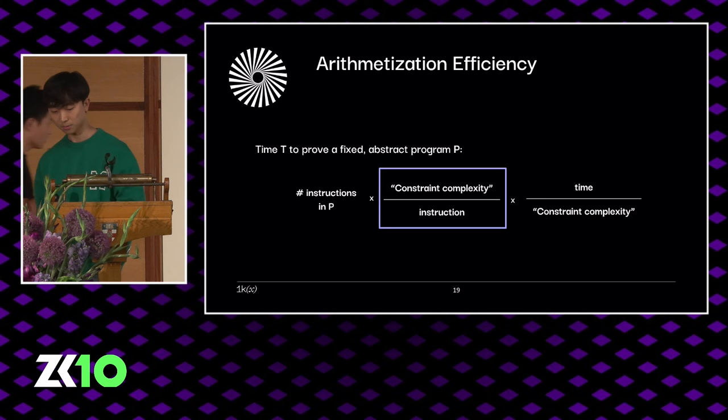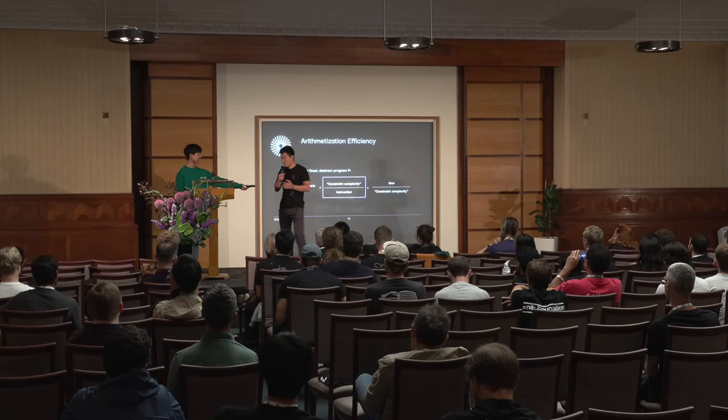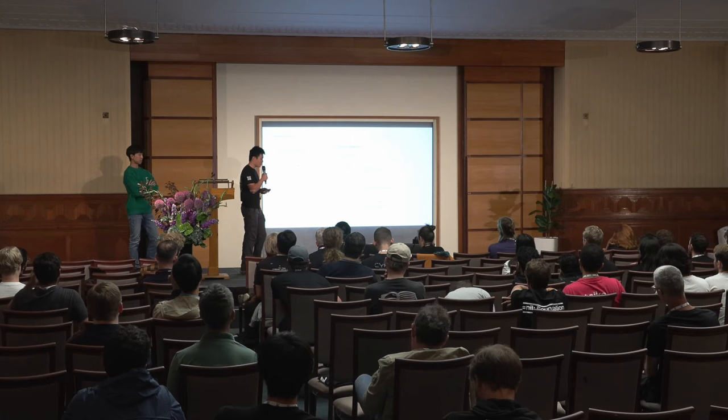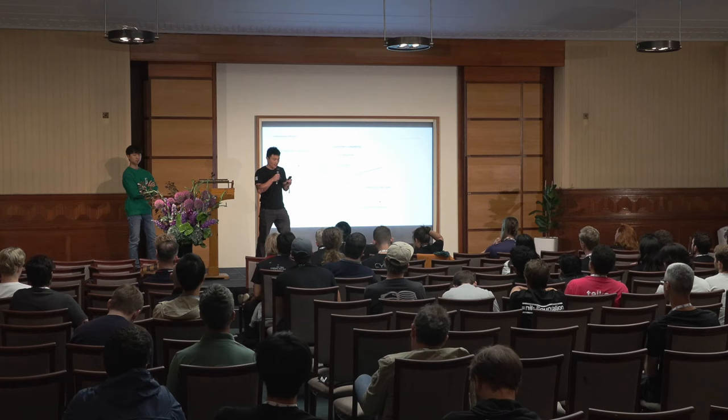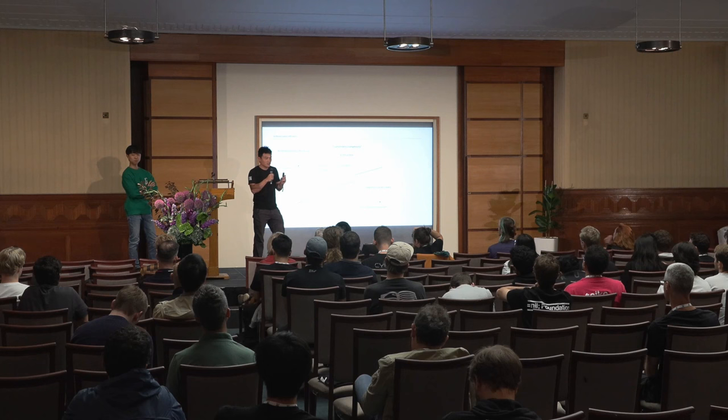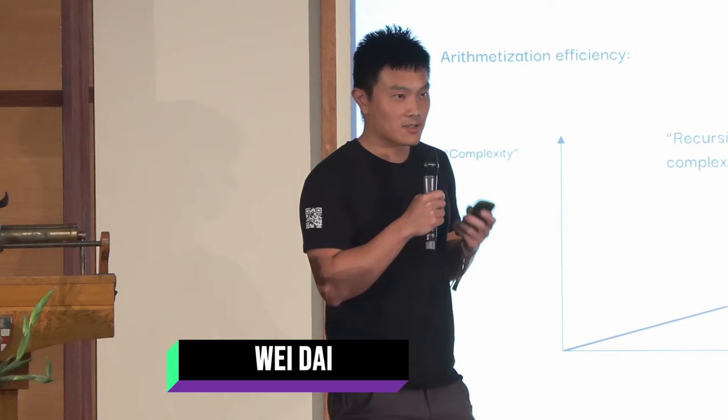Next, let's look at arithmetization efficiency — basically how many constraints we need to express one instruction. If you plot the complexity of constraints as a function of the number of cycles or instructions executed, you get a roughly piecewise linear graph, where the length of each segment on the x-axis is what we call the segment cycle count.